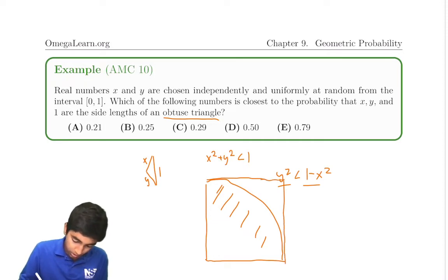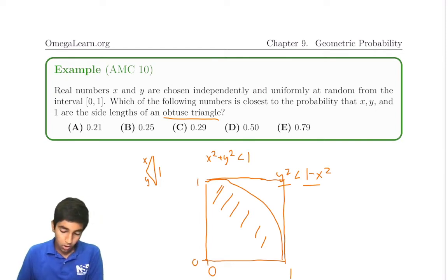You can just draw like this right here. Where this is from 0 to 1, 0 to 1. So, is that it? Is it just pi over 4 then? Is that our answer? Because that's the area of a quarter circle? Careful, because it says side lengths of an obtuse triangle. It's two words, not just one.